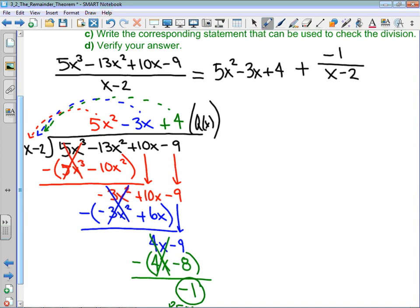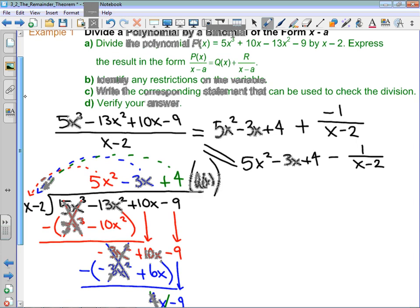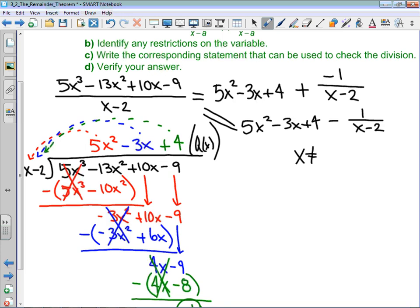Now you could write this as 5x squared minus 3x plus 4 minus 1 over x minus 2, because really those are equivalent to each other. Now that's our division statement, but what I did is I kind of skipped b here. Oh no, sorry, that is a right, divide the polynomial, we did that. So b, to identify any restrictions on the variable: because we have x minus 2 in a denominator, it's very important that x cannot be equal to 2, because that would cause us to divide by 0, and we can't do that.